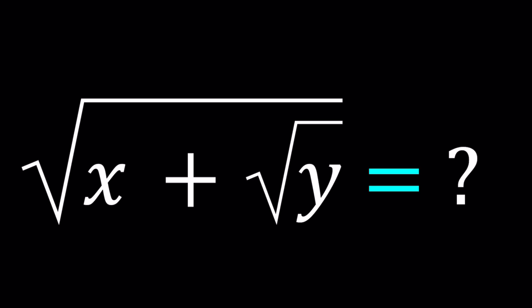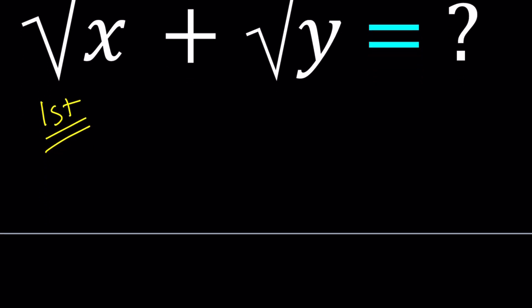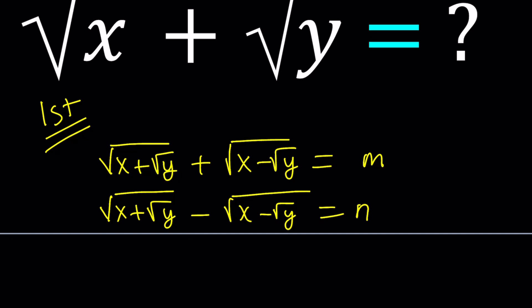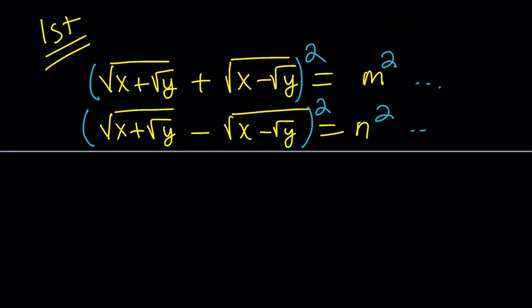I'll be presenting two methods. For my first method, I'm going to write the square root of x plus root y, then add its conjugate and call this m, and then write the same thing with a minus sign in between and call that n. What I'm going to do next is square each on both sides.